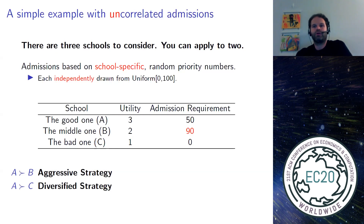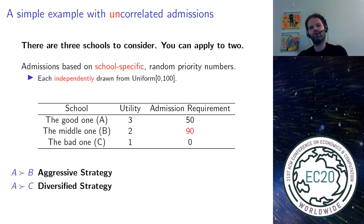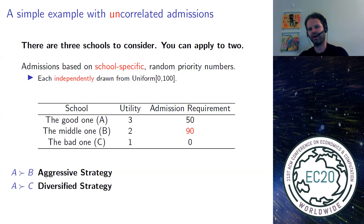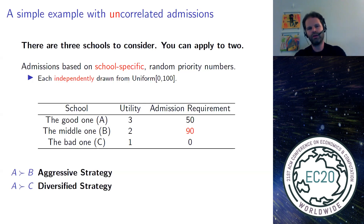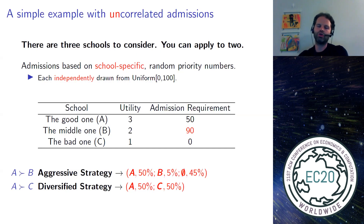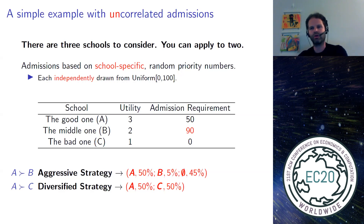Admissions decisions across schools don't have to be correlated. For example, if you apply to charter schools in New York, each school has their own separate lottery that decides who is accepted. In this slide, you can see an example of such a market, very similar to the previous example. We kept the same schools and the same thresholds, only that the threshold for school B was changed from 45 to 90. Now each school has their own independent and uniformly drawn number that determines priority. The result is that the distribution over outcomes from the aggressive strategy and from the diversified strategy is exactly the same as in the previous example.